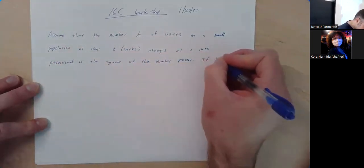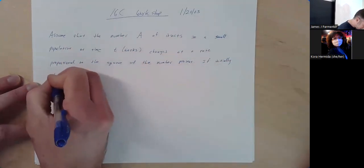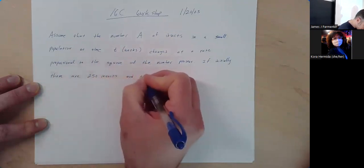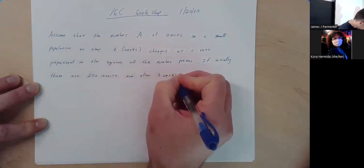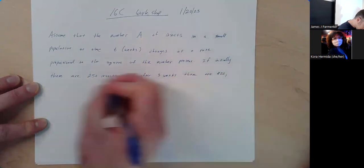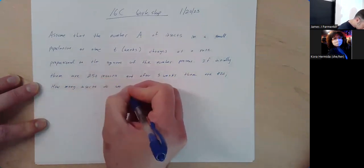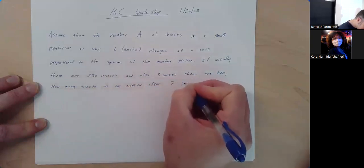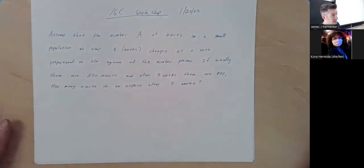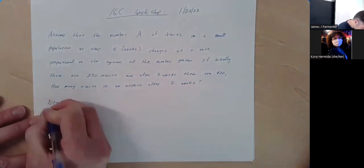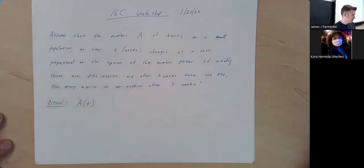If initially there are 250 of these insects, and after three weeks there are 420, how many insects do we expect after seven weeks? What this question doesn't explicitly say, but certainly does require, is that we have to: one, write the differential equation for this setup, and then two, solve it so that we know what the function is. We need to know what A is as a function of time.